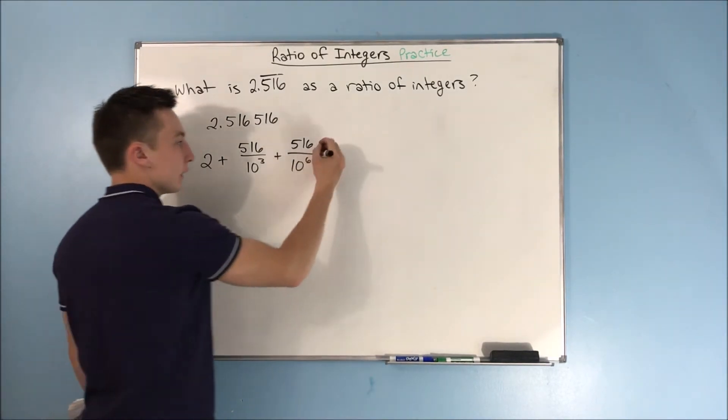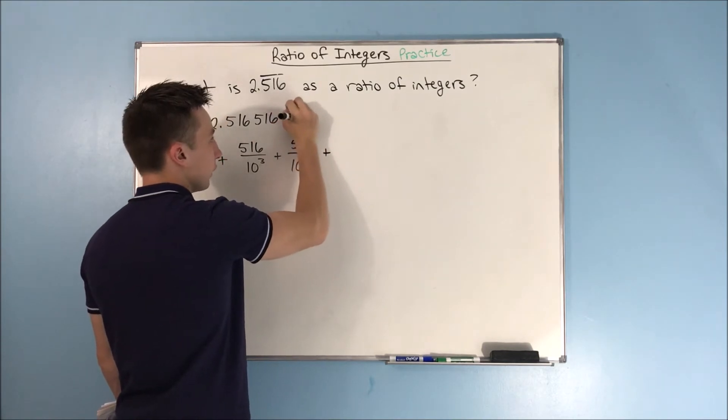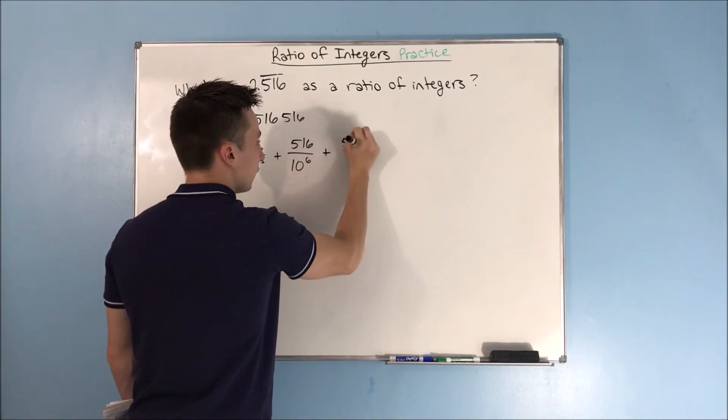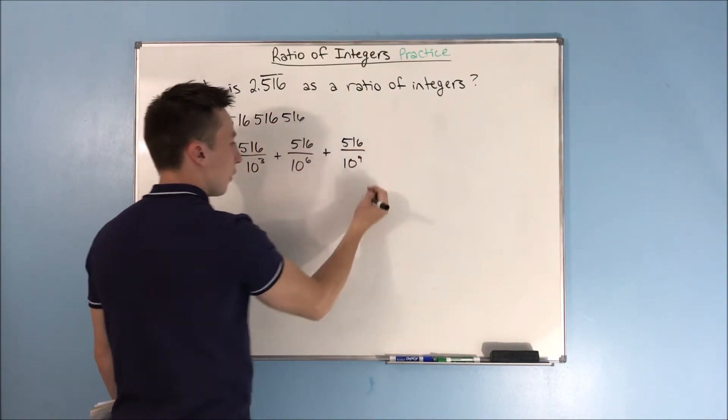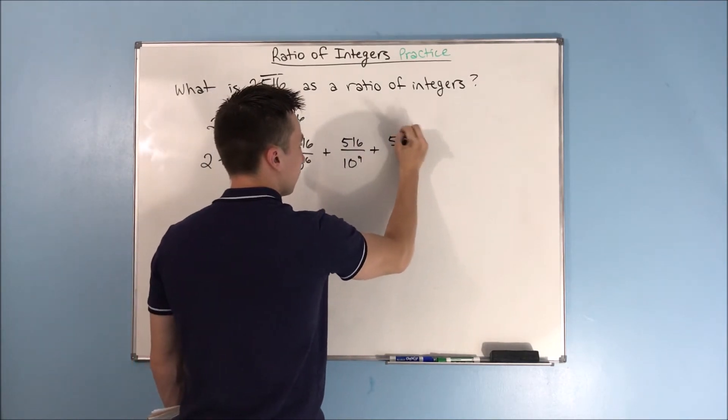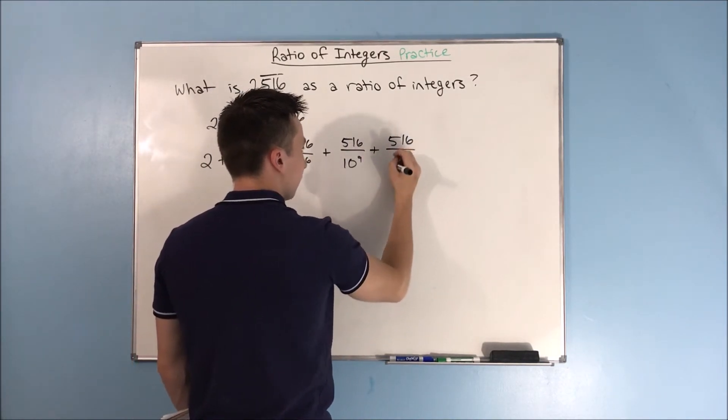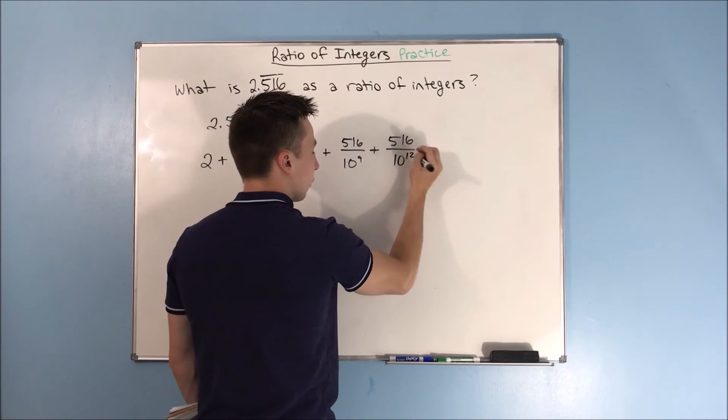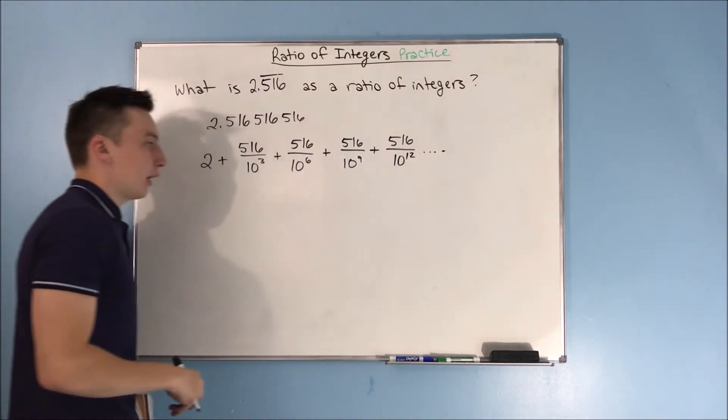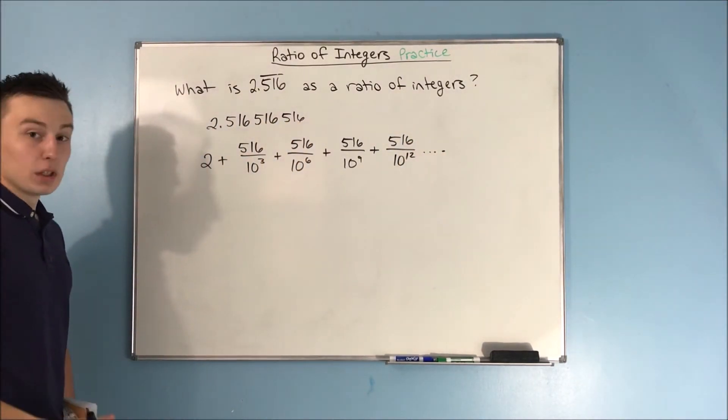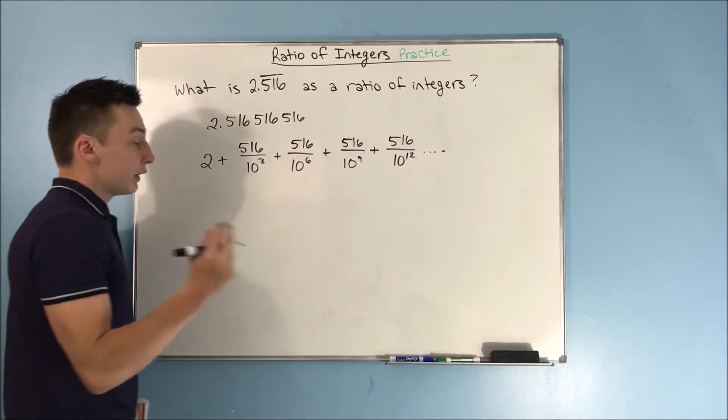And you can see the trend here. This next term, when we add another 516, it's going to be 516 over 10 to the ninth. We'll add another 516 and get 516 over 10 to the twelfth, and that'll go on and on and on. So we can now write this in our summation notation.